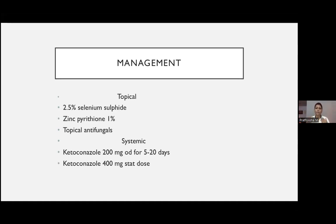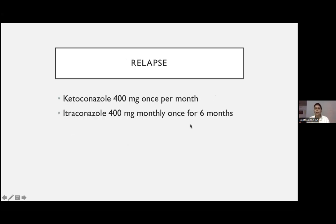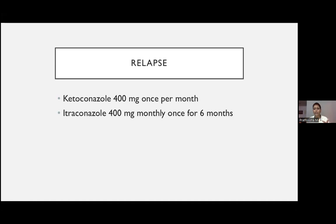For extensive tinea versicolor, fluconazole 400 mg stat dose is recommended, but since we only have 150 mg available, I give two tablets (300 mg). Prescribe topical antifungal and ask the patient to continue for one month. For relapse cases after two months, prescribe ketoconazole 400 mg once per month or itraconazole 400 mg monthly for six months. Before prescribing ketoconazole or itraconazole, perform a liver function test.